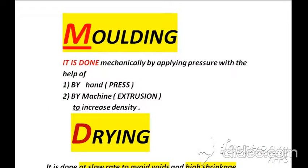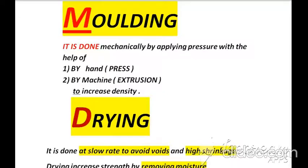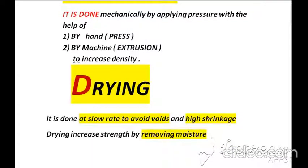The next step is molding, done mechanically by applying pressure by hand through a press, or by machine through extrusion, to increase density. The next step is drying, done at a slow rate to avoid voids and high shrinkage. Drying increases strength by removing moisture.